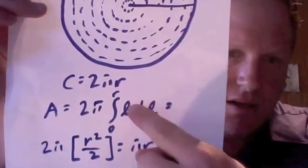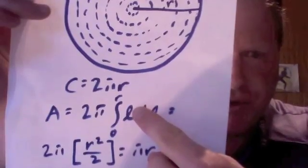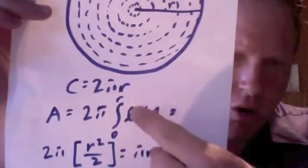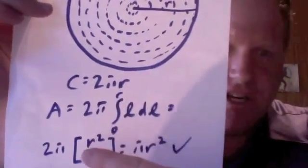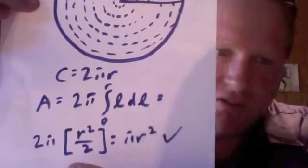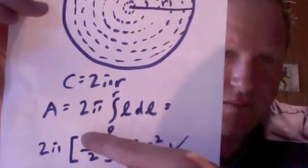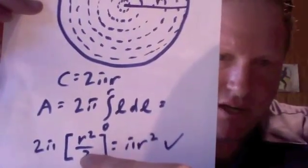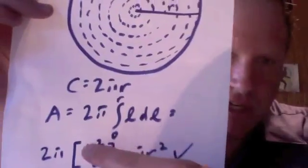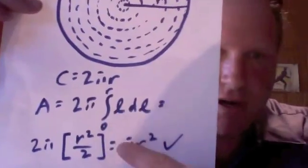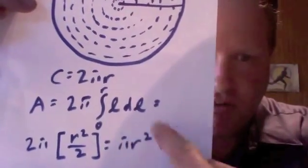When that's going to be equal to, I skipped the step here where I should have had L squared over 2 from R to 0. I apologize for that. I just kind of skipped the step there, so my mistake on that. But that's going to be equal to 2 pi times R squared over 2, which would be this integration. And then the 2s cancel the numerator and the denominator, and that's going to be equal to pi R squared.